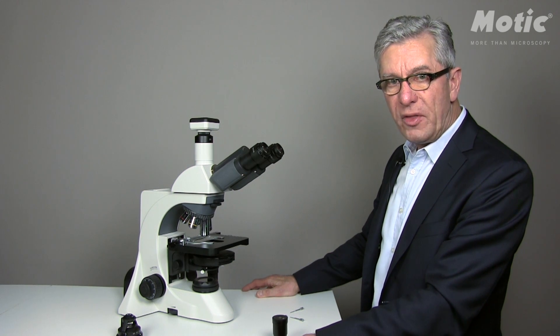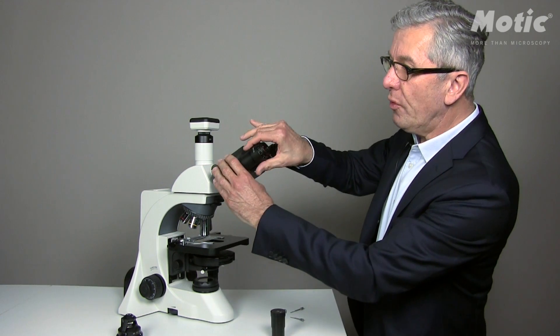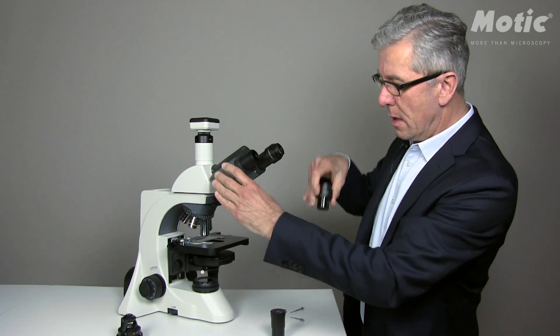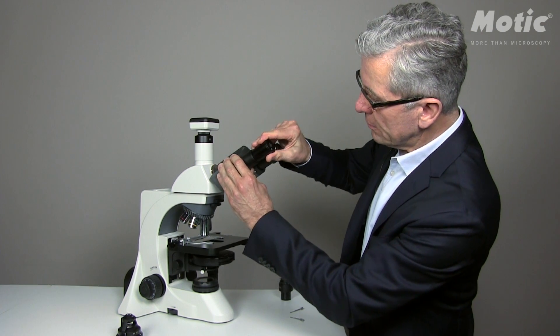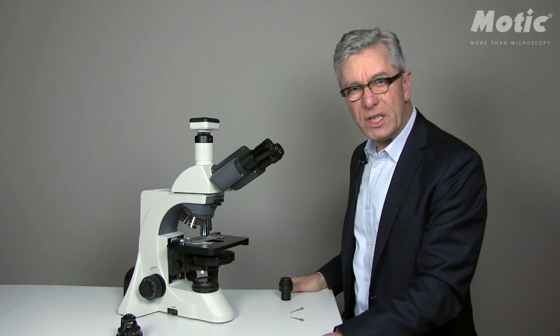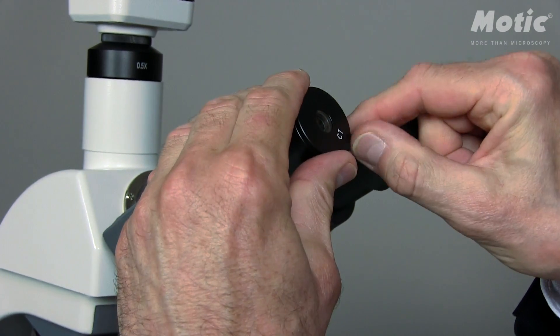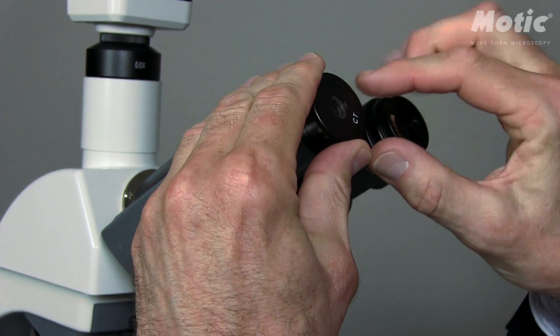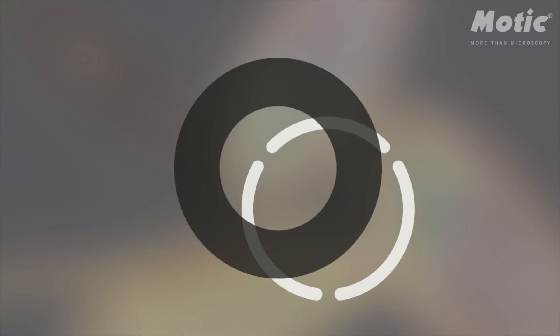The final alignment of the illumination with a phase ring is done with the help of the centering telescope. You have to remove the regular eyepiece and instead you will have to push in the centering telescope. Focusing of the centering telescope is done by loosening the fixing screw and pulling out the inner part of the centering telescope. Once you've found those two rings I was talking about, just fix the screw for firm positioning.